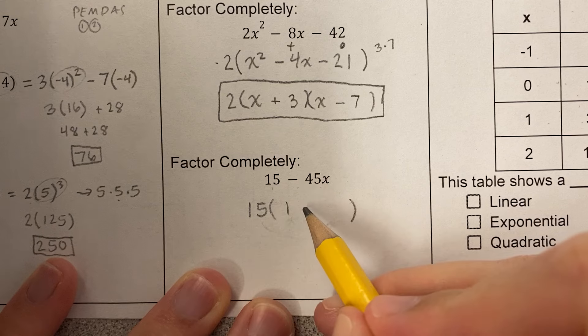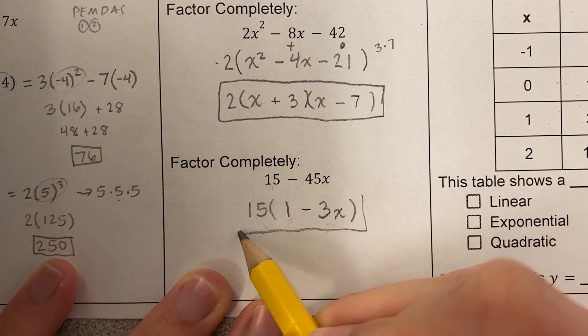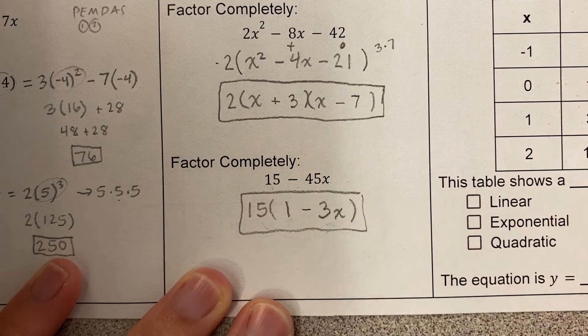And 15 times what is negative 45x? Well, 15 times a positive times a negative is negative. 15 times 3 is 45. And there's an x. So this becomes 15 times 1 minus 3x.